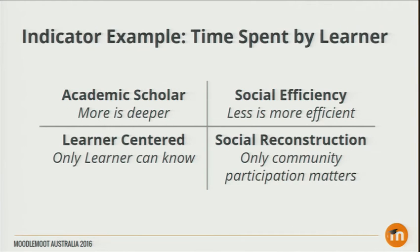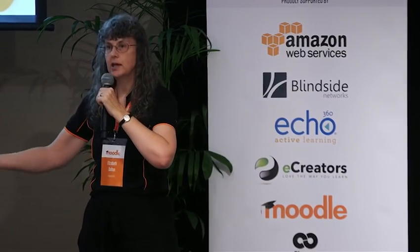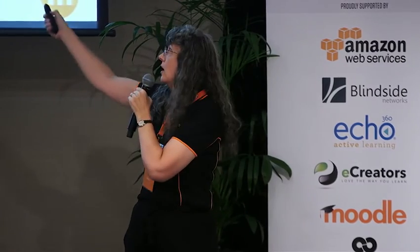How does this change what we're measuring in analytics? This is the important thing I have not seen any company taking into account. If you are following an academic scholar model, you may need to show that your learners have spent a certain amount of time, because more time spent means deeper reflection. But if you are in a social efficiency model, less time is more efficient — your purpose is to help someone gain skills in the minimum time possible. These are in direct conflict with each other, and yet a great many institutions of higher education are trying to pursue both simultaneously.